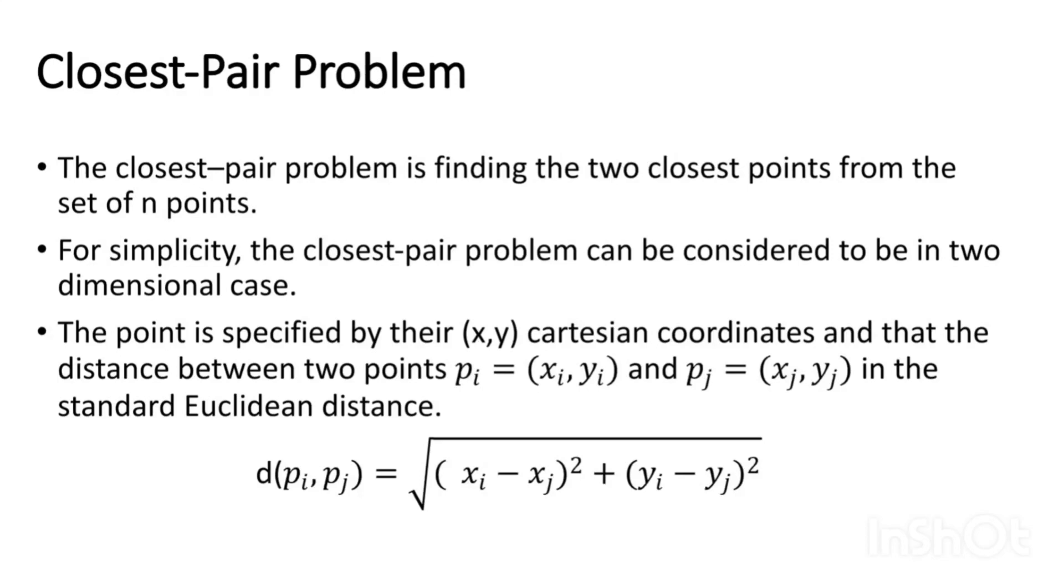Closest pair problem. The closest pair problem is finding the two closest points from the set of n points. We can find the distance between two points by the standard distance formula d of pi comma pj is equal to square root of xi minus xj whole square plus yi minus yj whole square.